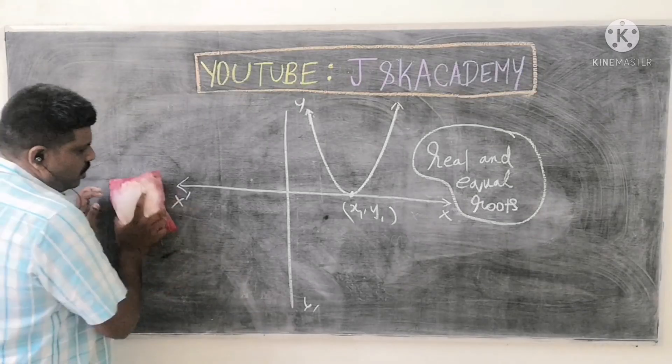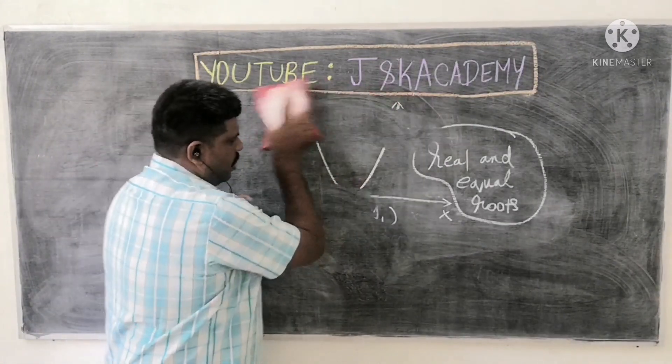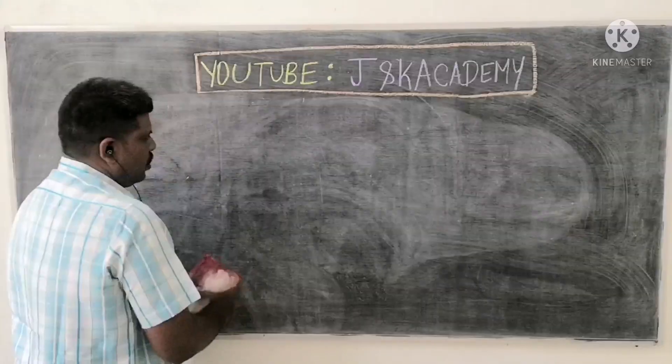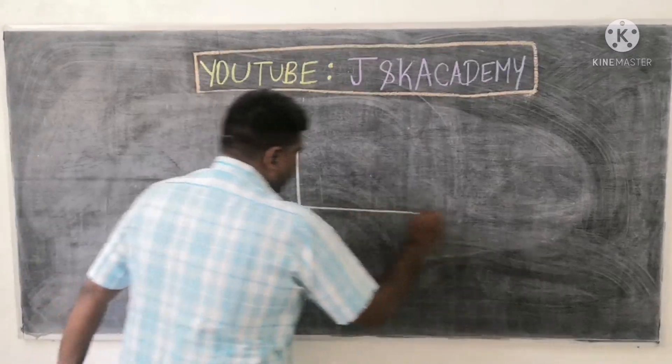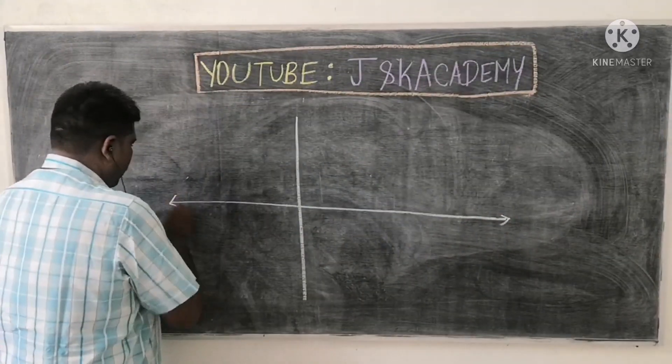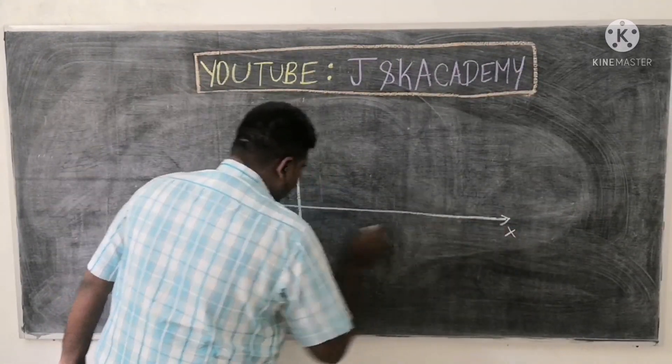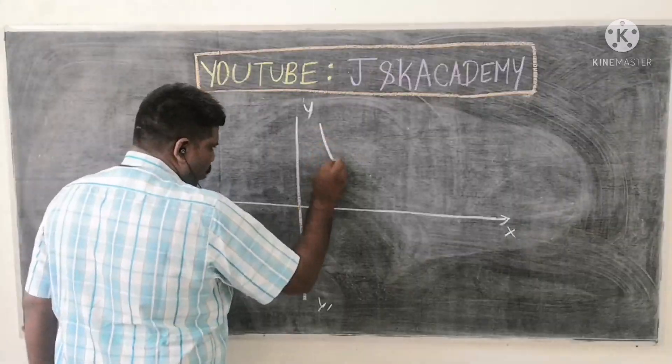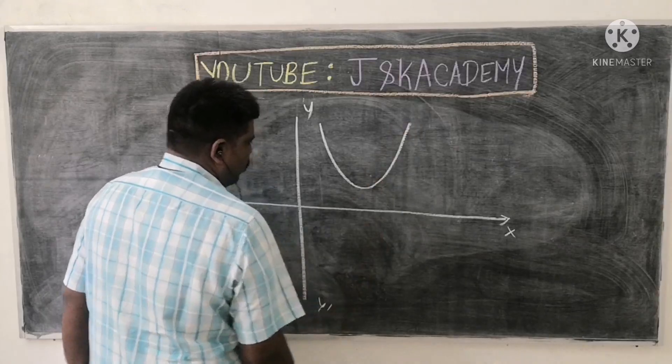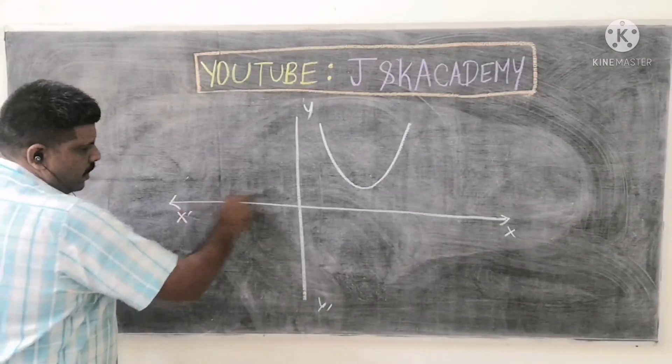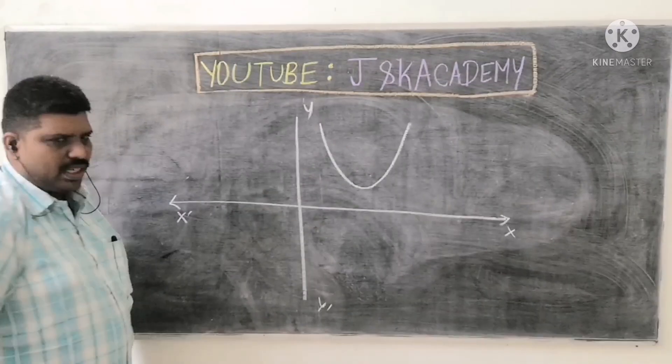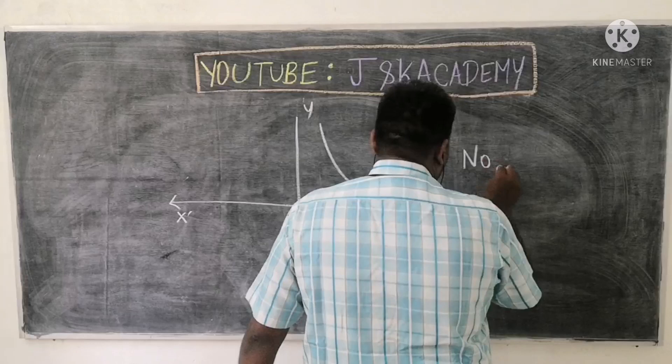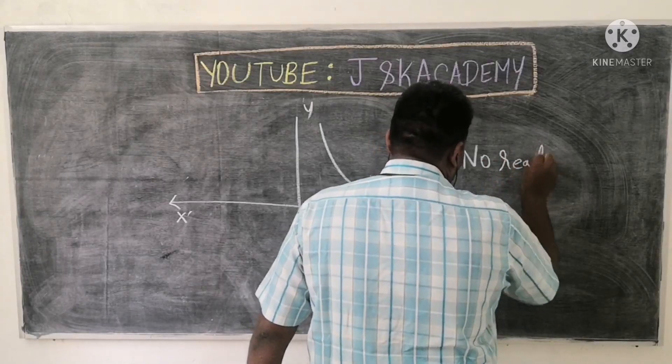So next two, we will see not intersected. X, x dash, y dash, y. Now this Parabola, this is no real roots. So x axis, Parabola, not intersected. This is no real roots.